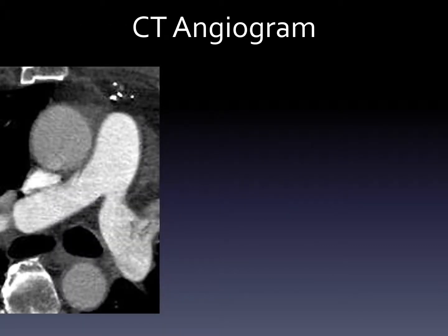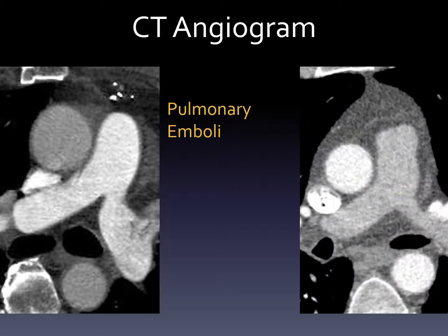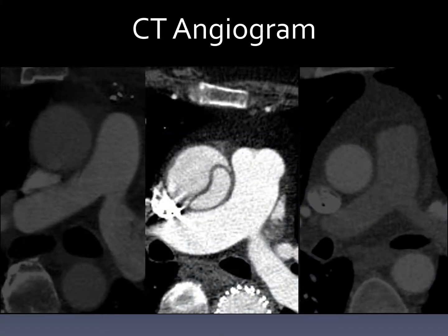A specific type of contrast-enhanced chest CT is where we make sure there's as much contrast as possible in the vessels — it's called an angiogram. We can target different vessels to be particularly bright. Here we tried to make the pulmonary arteries bright, and in other cases we target the aorta to see if something's wrong with it. Sometimes you can get a scan that shows multiple different parts very bright — here we see both the pulmonary arteries and the aorta. Sometimes this is intentional, sometimes it's just a result of how the scan was done.